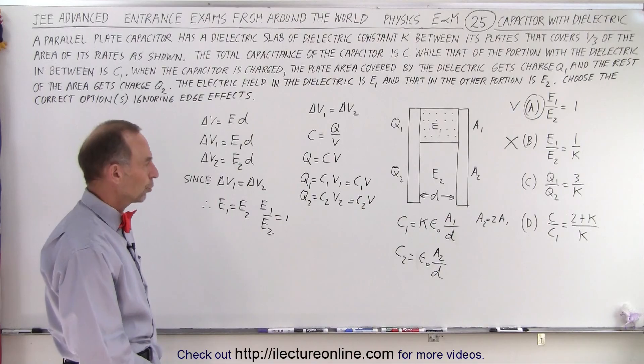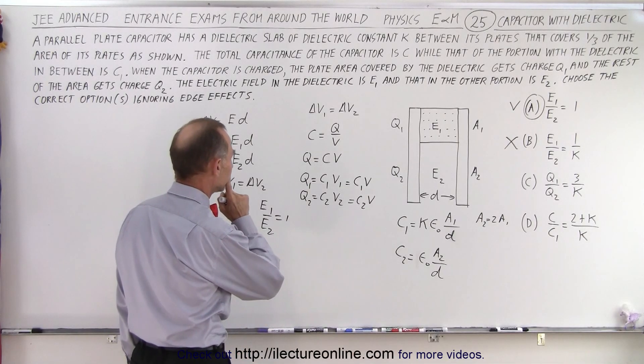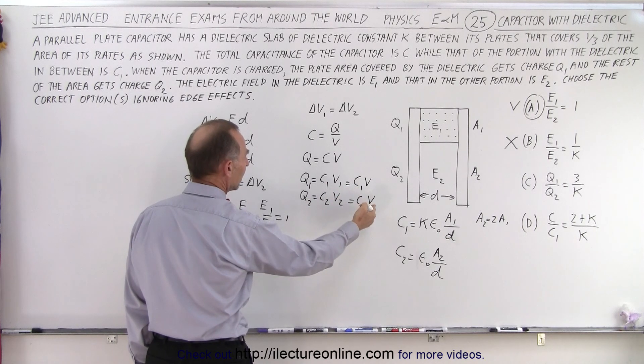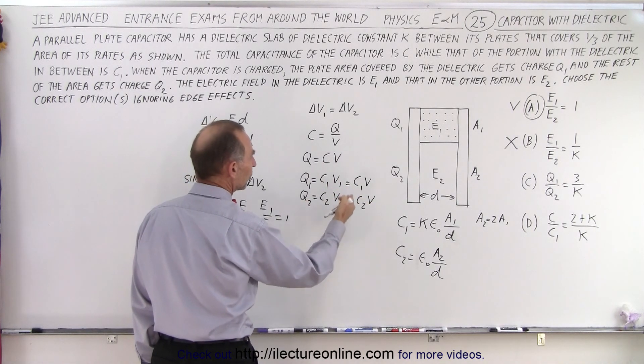What is the ratio of Q1 to Q2? Well, we know that Q1 and Q2 are defined by this, so essentially Q1 divided by Q2 is the same as the ratio of C1 over C2.